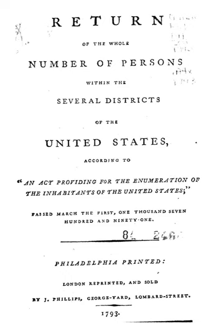The 1950 Census Questionnaire removed the word 'Color' from the racial question, and also removed Hindu and Korean from the race choices. The 1960 Census re-added the word 'Color' to the racial question, and changed 'Indian' to 'American Indian,' as well as added Hawaiian, Part Hawaiian, Aleut, and Eskimo. The 'other' option was removed.